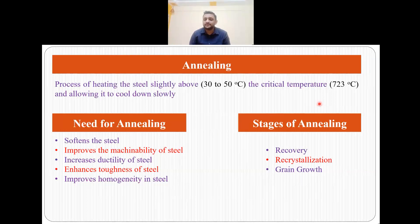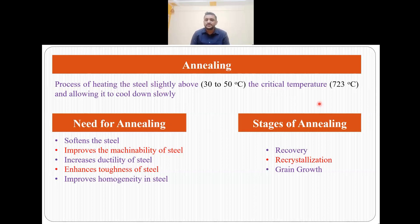But first, let's talk about what is annealing. Annealing is the process of heating the steel slightly above — that is 30 to 50 degrees above — the critical temperature which is 723 degrees centigrade, and allowing it to cool down slowly. Annealing is done to soften the steel, to improve the machinability of the steel, to increase the ductility of steel, to enhance the toughness of steel, and to improve the overall homogeneity of steel.